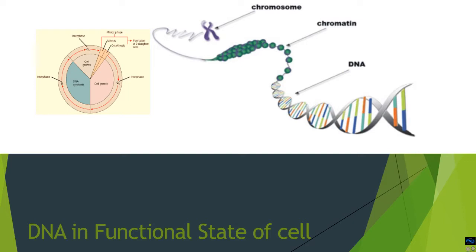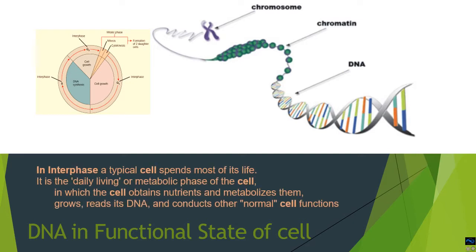Out of all the phases of the cell cycle, the one phase that is important in synthesis is called the interphase state. A typical cell spends most of its life, usually 40 to 50 percent of the cell cycle, in the interphase state. This is the metabolic phase of the cell where the cell obtains nutrients, metabolizes them, and synthesizes new DNA, RNA, and proteins for its normal function.